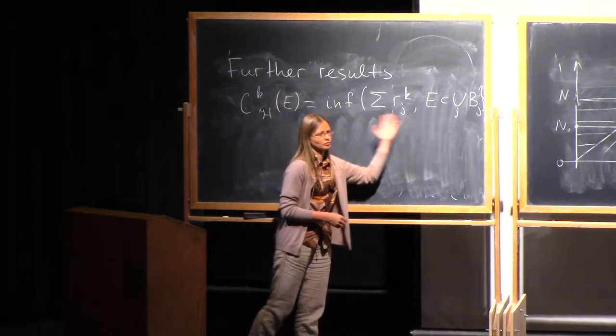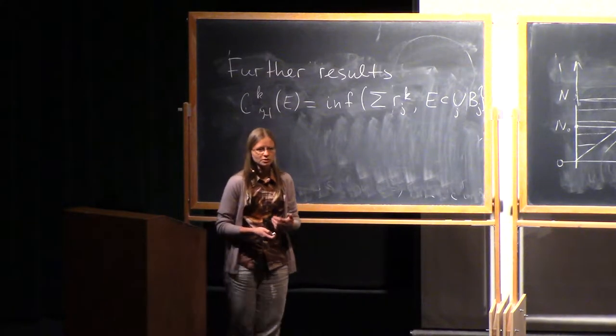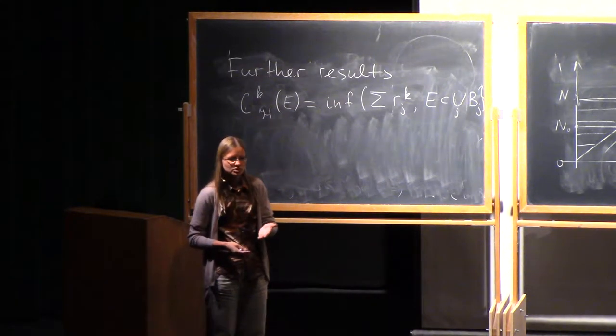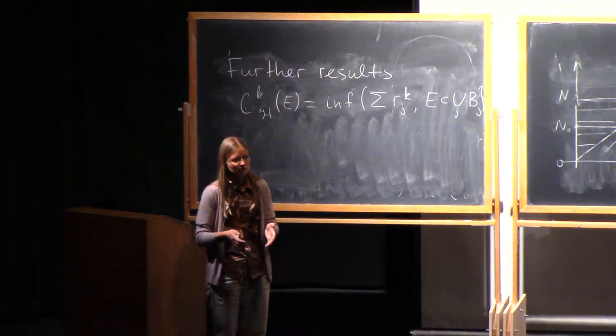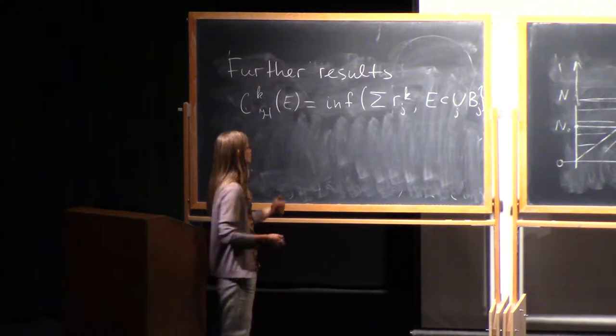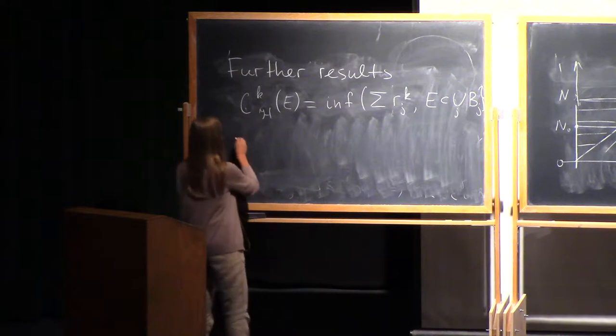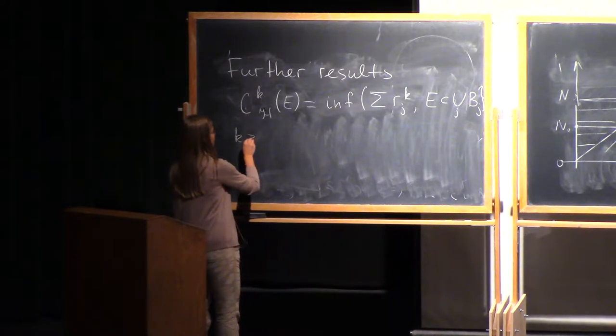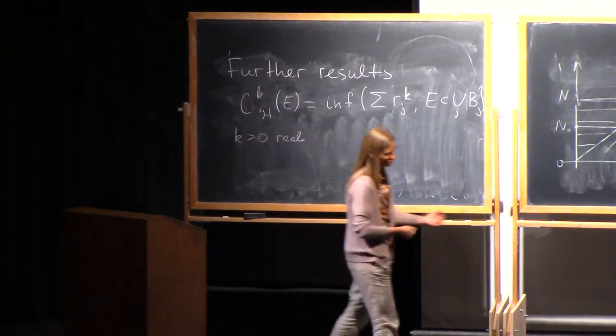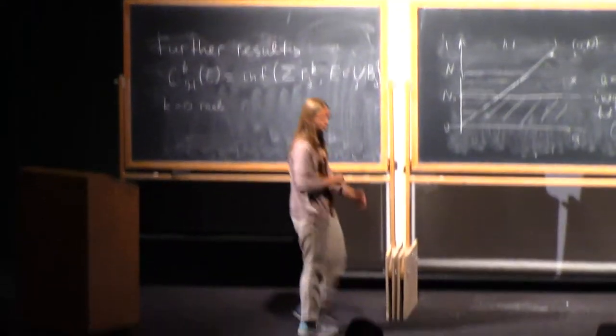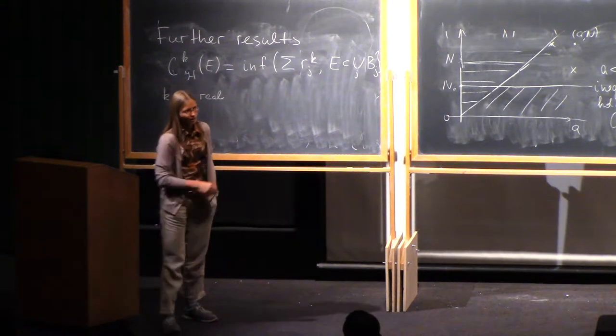The advantage of Hausdorff content if you compare it to Hausdorff measure is that Hausdorff measure is almost always 0 or plus infinity. If you think about a set for all different k's, k is not integer, it's a positive real, the Hausdorff measure is either plus infinity or 0, and Hausdorff content is some quantity. It's a nice number bounded for bounded sets.